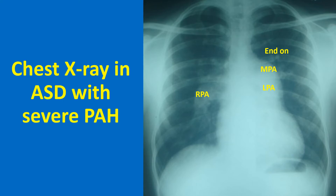X-ray chest PA view in atrial septal defect with severe pulmonary hypertension shows prominent main pulmonary artery, right pulmonary artery, and left pulmonary artery behind the main pulmonary artery, with end-on views of dilated branch pulmonary arteries. Echocardiography documented a large secundum ASD with severe pulmonary hypertension and bidirectional shunt across the ASD. There is mild right atrial enlargement and the configuration of apex is right ventricular. Absence of significant cardiomegaly would suggest that pulmonary hypertension developed early before a very large shunt was established.